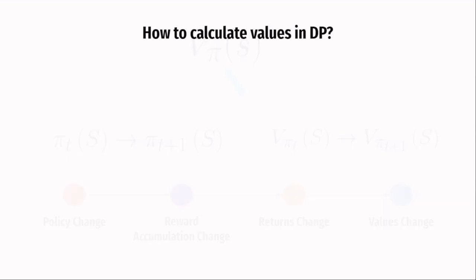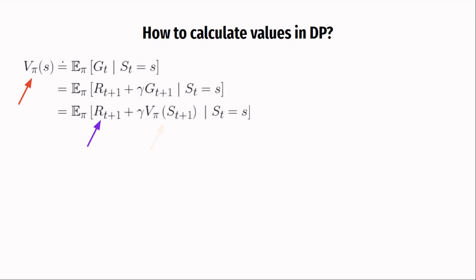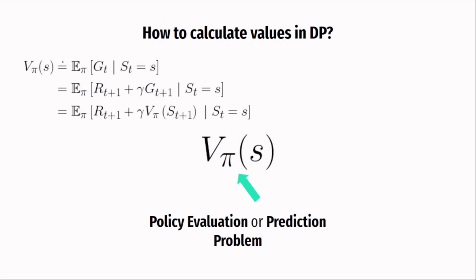Values are not magical numbers — they need to be calculated. To calculate the values for all the states, dynamic programming methods use a simple trick. We already know that the equation of the state value function is the expected return at that state following policy pi. This return can be unfolded and written as R(t+1) plus gamma times the return for the next state, including the discount factor. This return for the next step is actually the value of the next state. So you are calculating the value for the current state considering the reward for that step and the values for the next state. This step is called policy evaluation or the prediction problem.